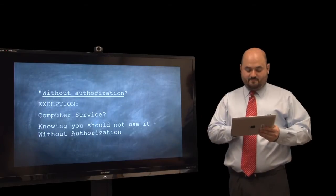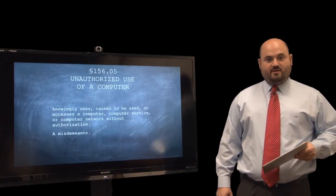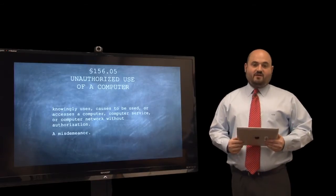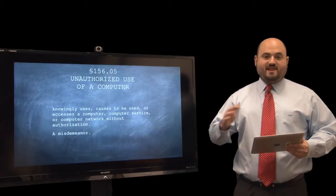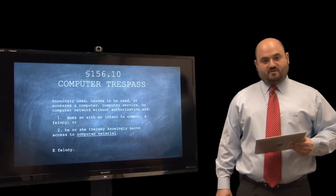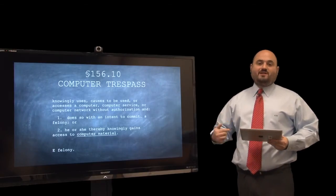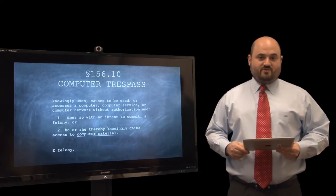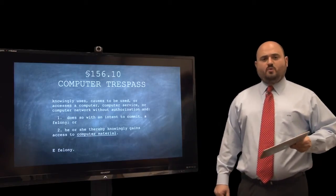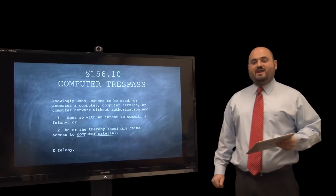To review: somebody is guilty of unauthorized use of a computer, a Class A misdemeanor, if they use a computer without authorization — in most cases meaning they were told no first. However, it becomes a more serious offense if one of two mitigating factors are true. It becomes a Class E felony, chargeable under computer trespass, if on top of using a computer without authorization, either you do so with the intent to commit or further a felony, or you knowingly gain access to computer material — private material. If you're using somebody's computer without authorization and gaining access to their private files or doing so with criminal intent, the charge is computer trespass — a Class E felony, meaning more than a year in prison.